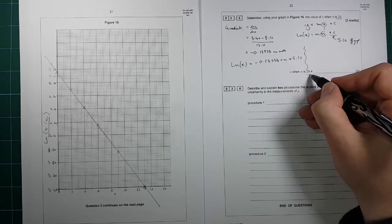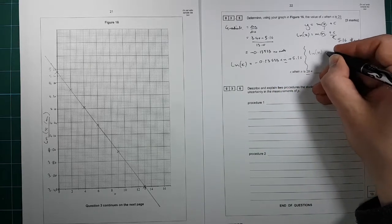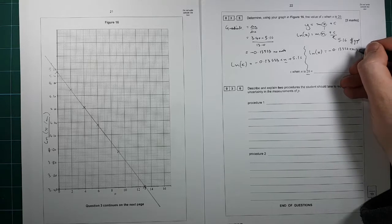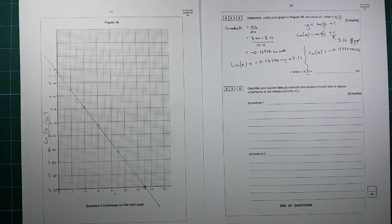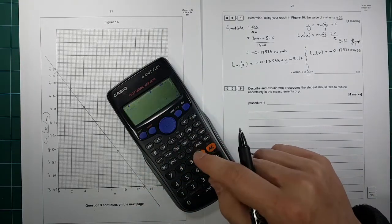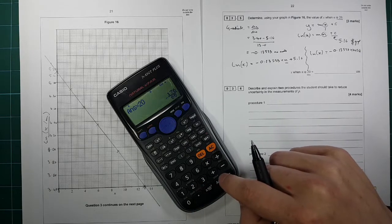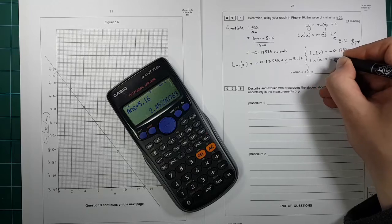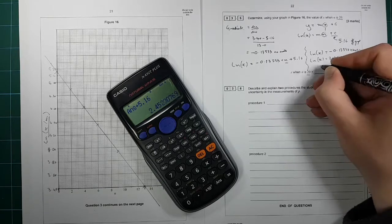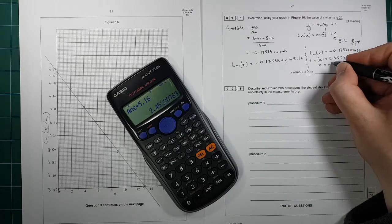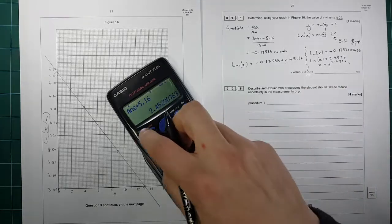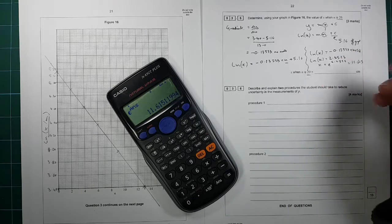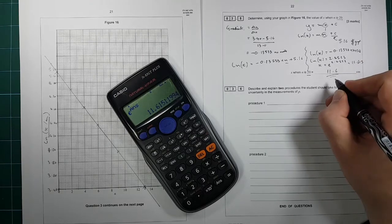So now we substitute in n equals 20 into that and we get ln of x is equal to minus 0.13538 times by 20 plus 5.16. That was our gradient, times it by 20 plus 5.16 gives us ln of x is equal to 2.4523. So x is equal to e to the power of 2.4523, which is equal to 11.615, so 11.6 centimeters to 3SF.